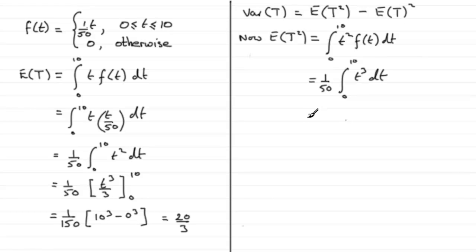Now if I integrate this, we've got 1/50 then multiplied by t to the power 4 over 4: up 1 to the power and divide by new power. And that's again going from 0 to 10.